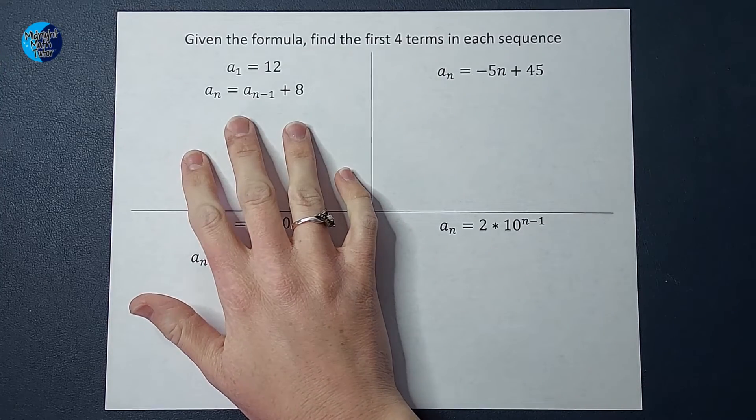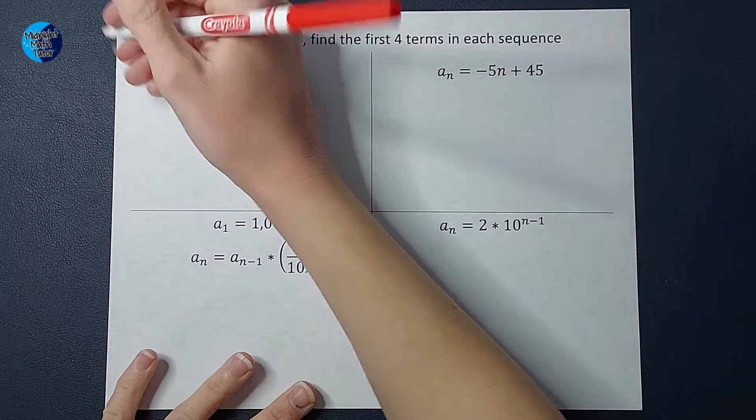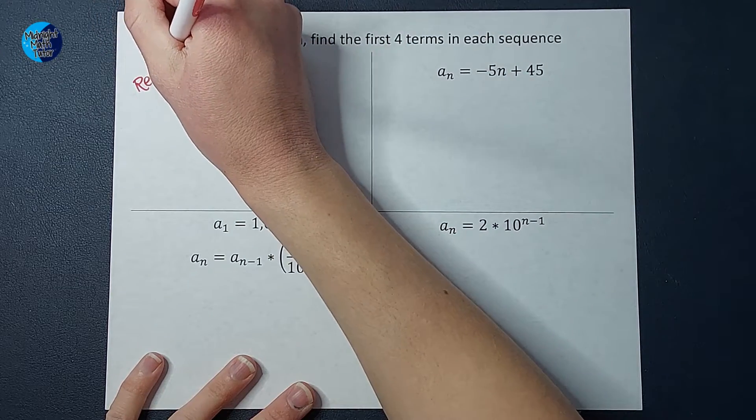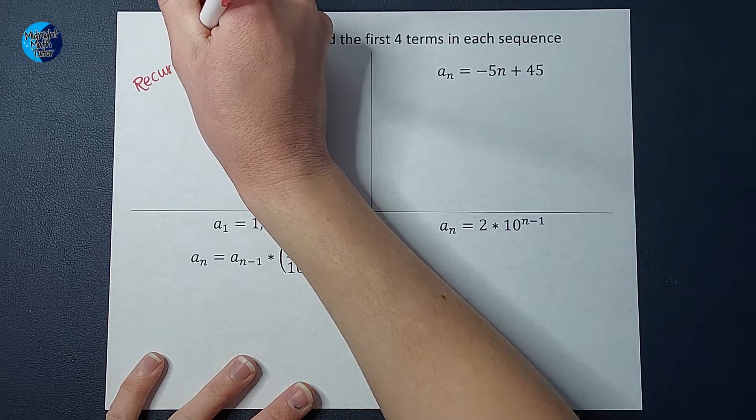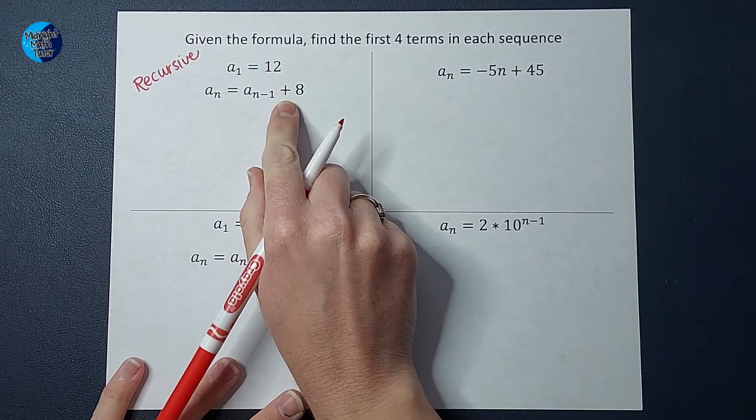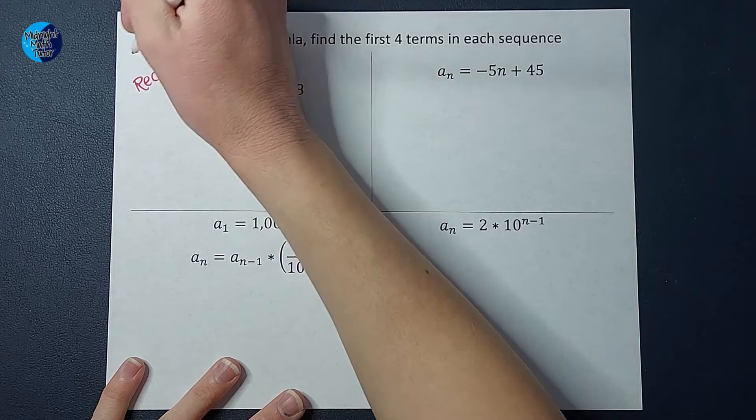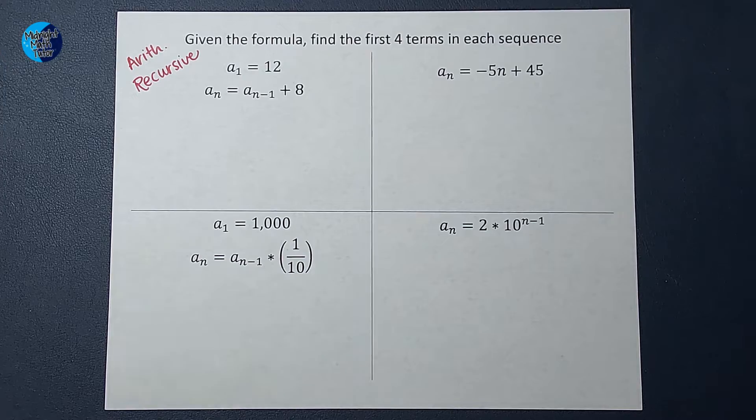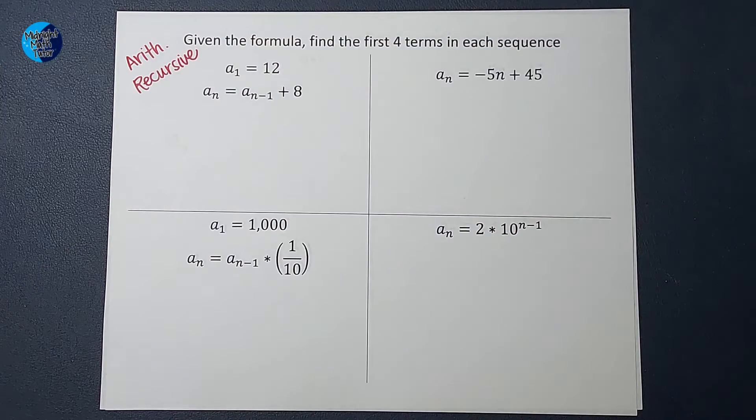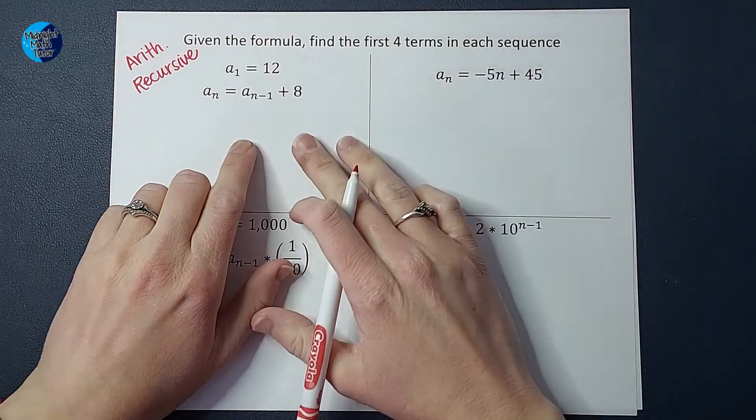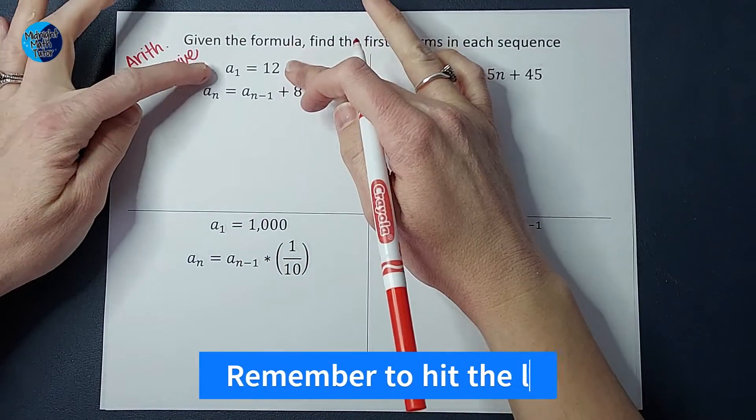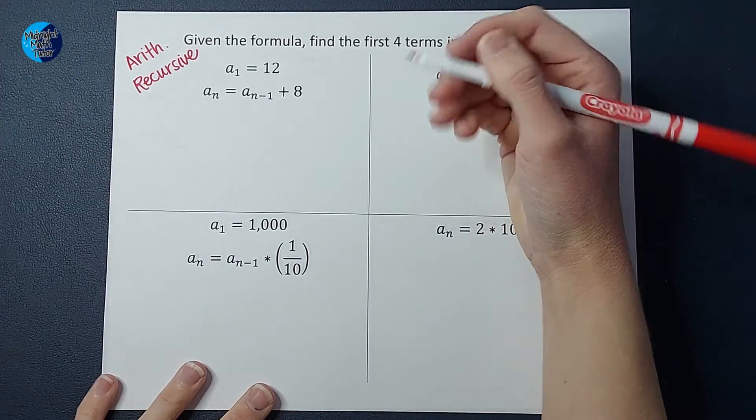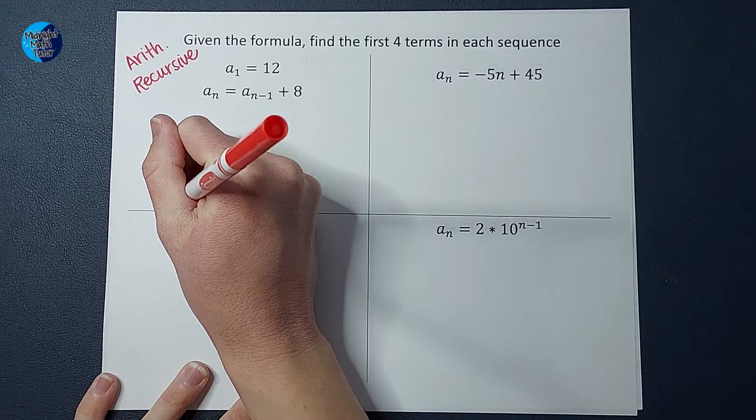Starting with this first one. This is a recursive formula. I know that because they've given us the a sub 1 up there. And I know it's arithmetic because of that plus 8. So this is an arithmetic recursive. Now if you don't identify that it's probably fine, but it makes me feel better. So we want to find the first four terms in this sequence. Well guess what? They already just straight up gave us the first one a sub 1 is 12. So that means the first number in this sequence is 12.